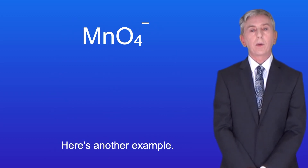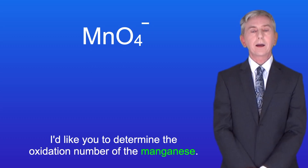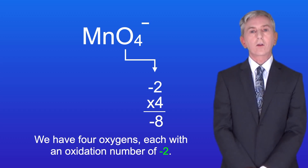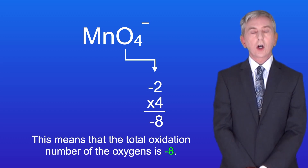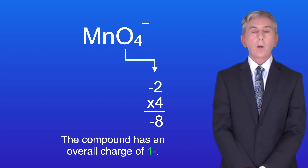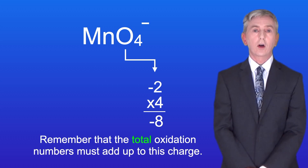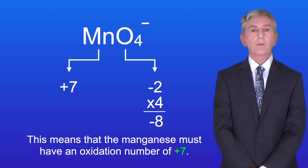Here's another example. This is an ion. I'd like you to determine the oxidation number of the manganese — pause the video and try this yourself. We've got four oxygens each with an oxidation number of minus two, so the total oxidation number of the oxygens is minus eight. The compound has an overall charge of one minus, and remember that the total oxidation numbers must add up to this charge. This means that the manganese must have an oxidation number of plus seven.